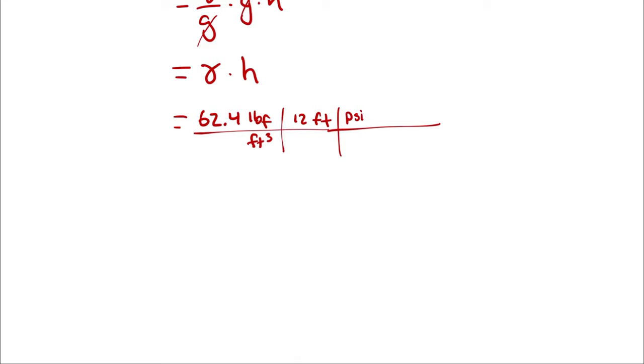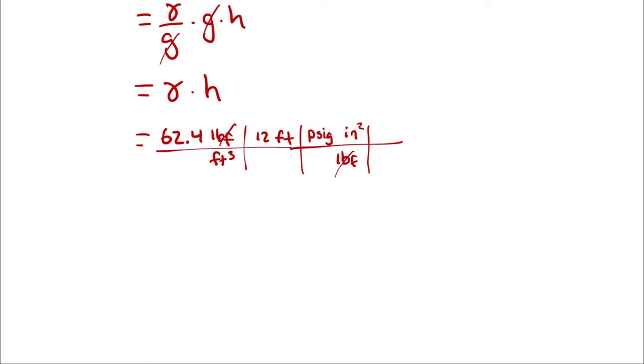Remember that G or A at the end of PSI is just an indication as to whether or not it is a gauge pressure or an absolute pressure. And a PSI is going to be a pound of force per square inch. So in order to get inches squared and feet squared to cancel, I'm going to have to convert 12 inches to one foot and square everything.